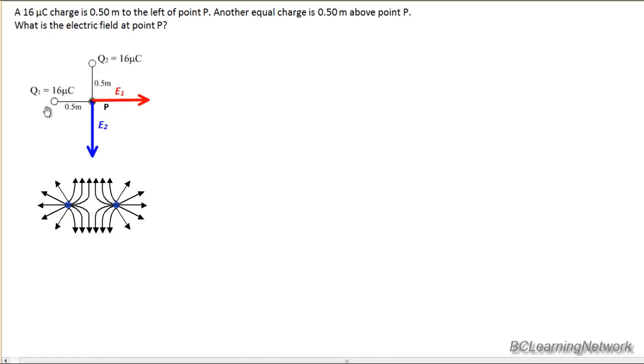So since our field lines always point away from positive, and both these charges are positive, if I look at Q1 alone, so imagine Q2 doesn't exist, at location P my field line will be directly away from Q1 along this red arrow. And I'm going to label that E1 to represent the electric field from Q1.